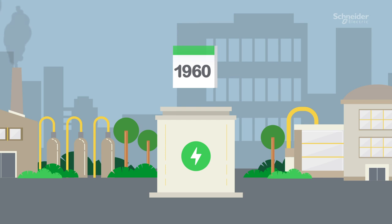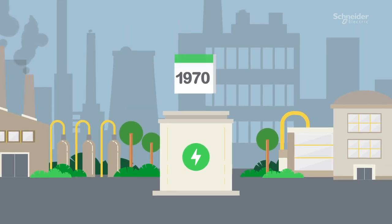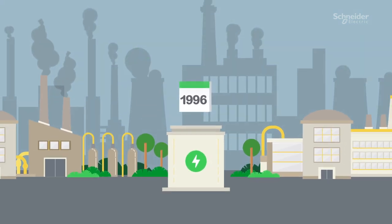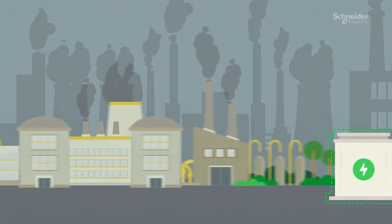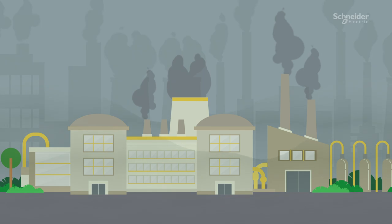For decades, SF6 has been used to insulate and break the electrical current in high and medium voltage. It is safe and reliable, and that's why it's the industry standard. With one problem: its greenhouse gas potential.